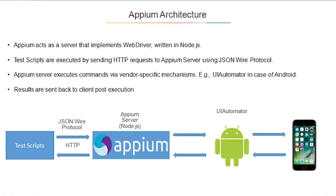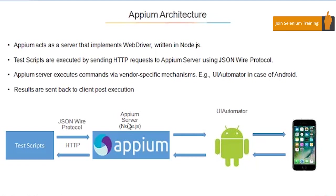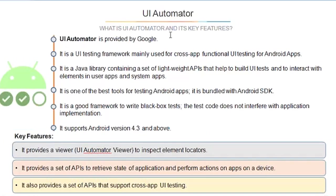How does Appium work? Appium is a server written in Node.js that implements WebDriver. Test scripts are executed by sending HTTP requests to the Appium server using JSON Wire Protocol. In a way, they are following the same philosophy as Selenium RC — your script sends commands to the Appium server, which converts them into commands acceptable by the target devices, similar to how the remote control server worked earlier.